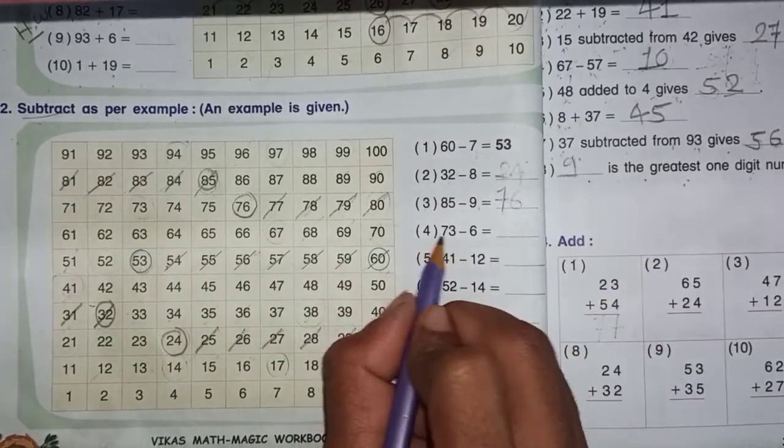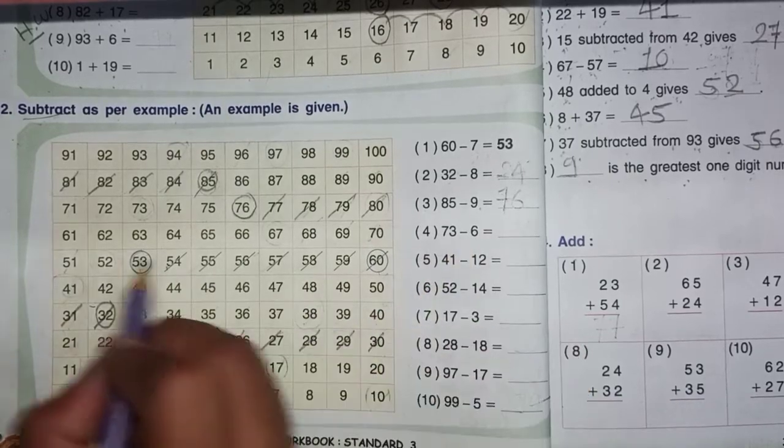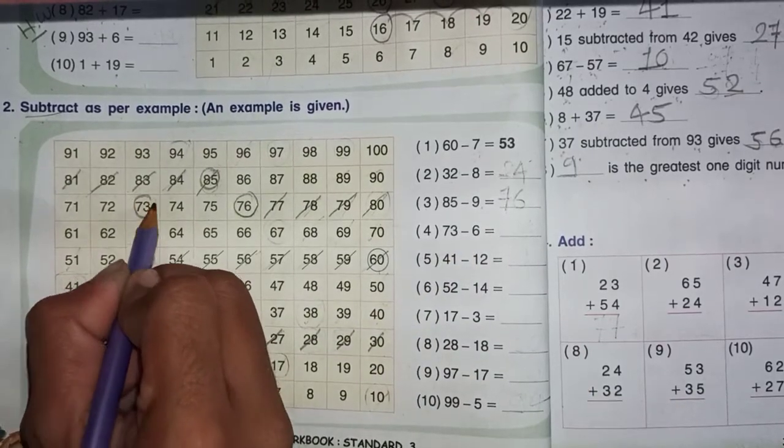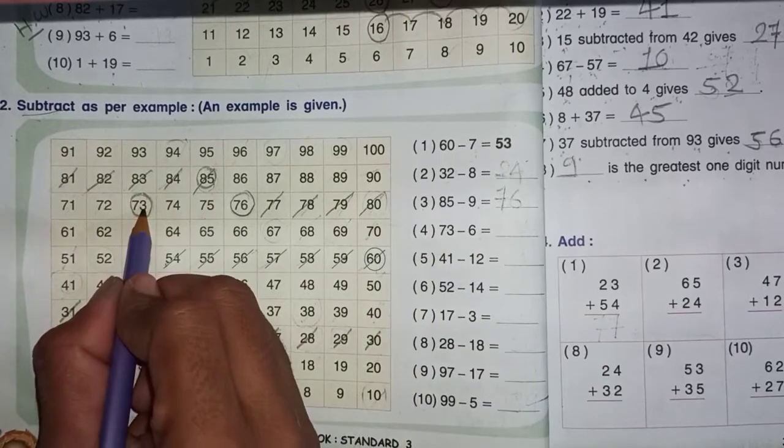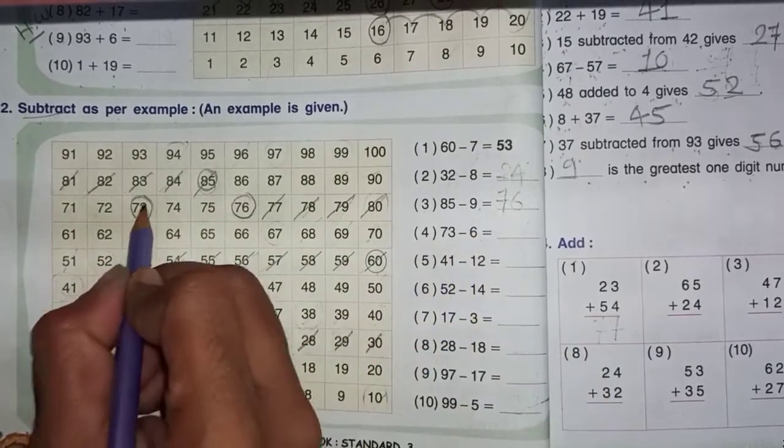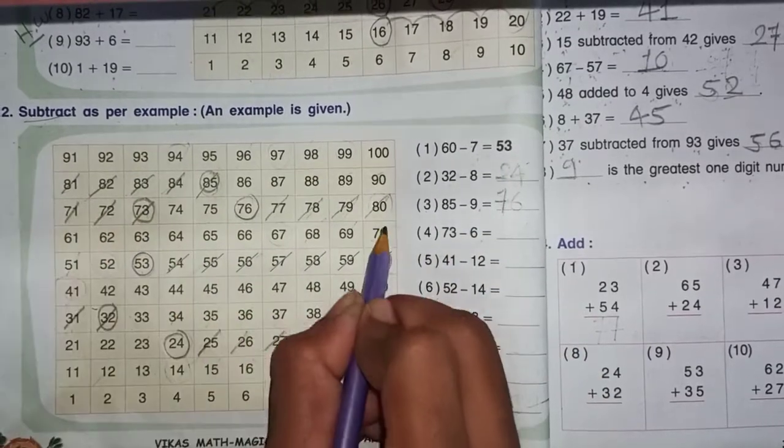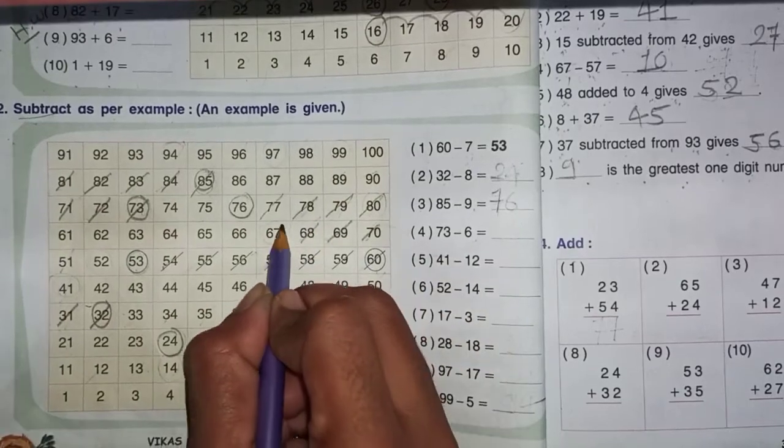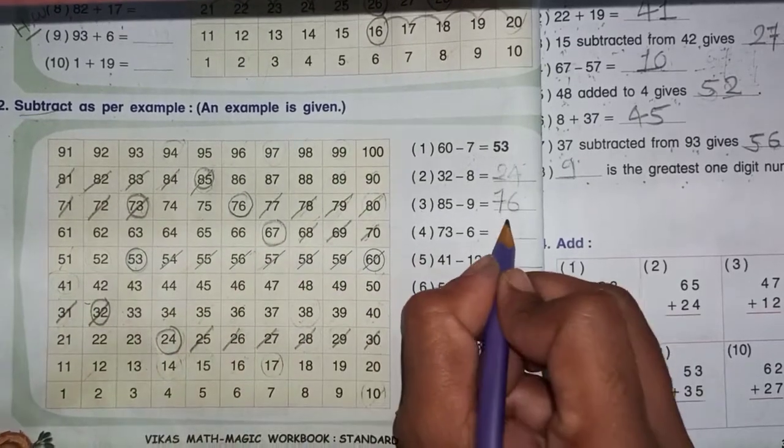Number 4, 73 minus 6. 73, where are we? How many to subtract? 6. Count 1, 2, 3, 4, 5, 6. The answer is 67.